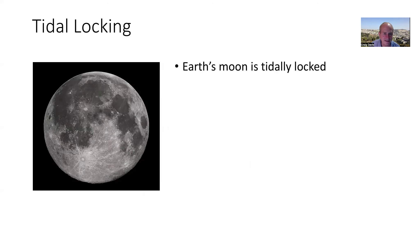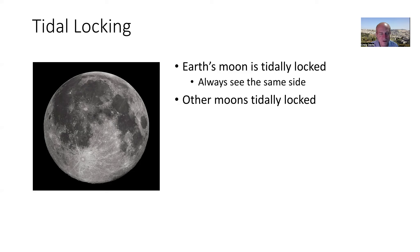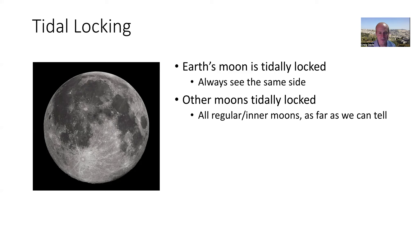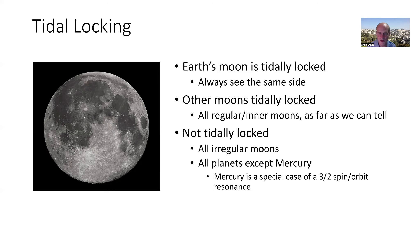So let's talk about tidal locking. Earth's moon is tidally locked — we always see the same side. All the regular inner moons in the solar system, as far as we can tell, are tidally locked: they rotate exactly once per orbit so the same face always faces their planet. All irregular moons we know of are not tidally locked. No planets are tidally locked, except Mercury, which is a special case — a 3:2 spin-orbit resonance.